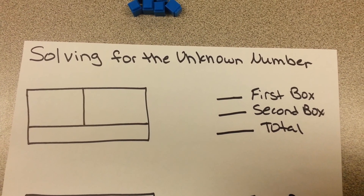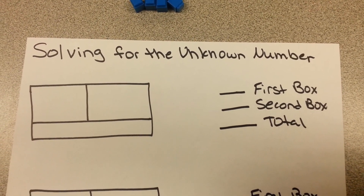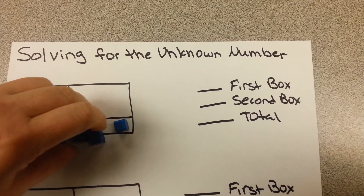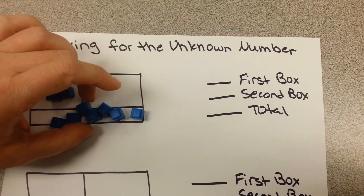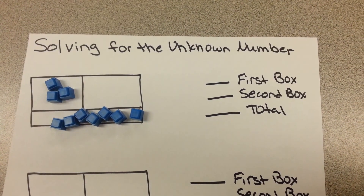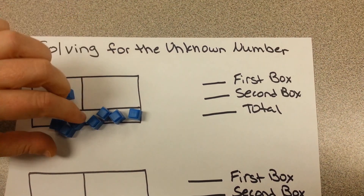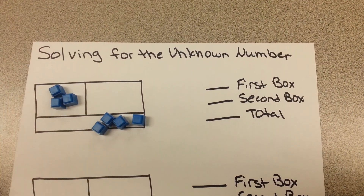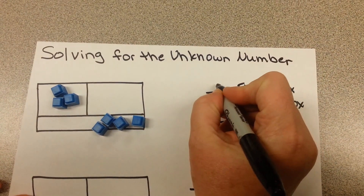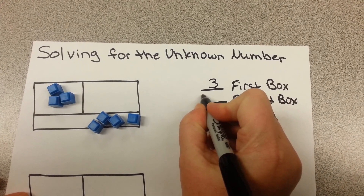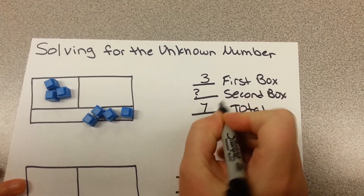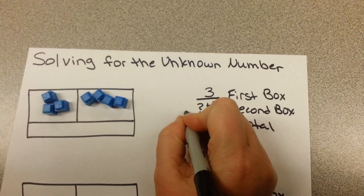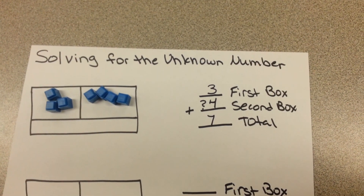Now we are going to move on to solving for an unknown number. In this case, we have three blocks in the first box and we know that there is a total of seven blocks when we are done. To figure that out, we take away the three blocks from the total and see how many blocks we have left over — that would be one, two, three, four. So the unknown in the second box is four. Three plus our unknown, which we determined was four, equals seven.